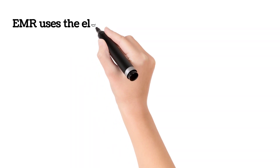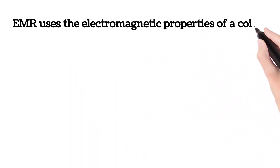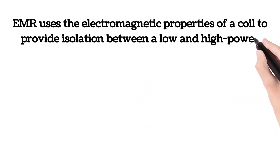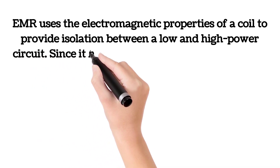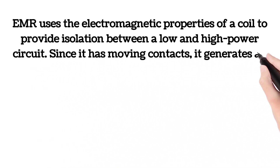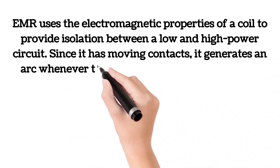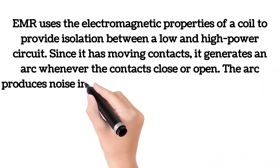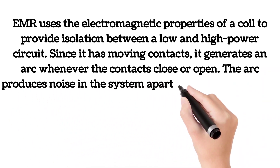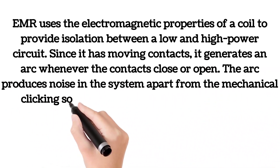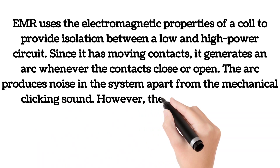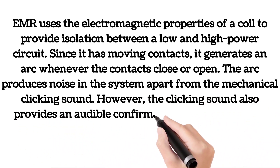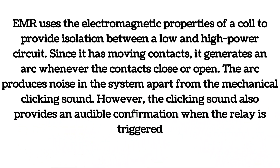EMR uses the electromagnetic properties of a coil to provide isolation between a low- and high-power circuit. Since it has moving contacts, it generates an arc whenever the contacts close or open. The arc produces noise in the system, apart from the mechanical clicking sound. However, the clicking sound also provides an audible confirmation when the relay is triggered.